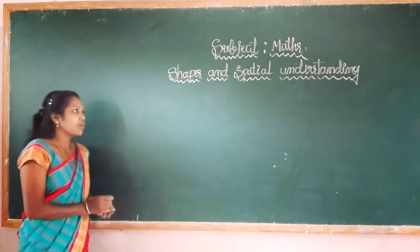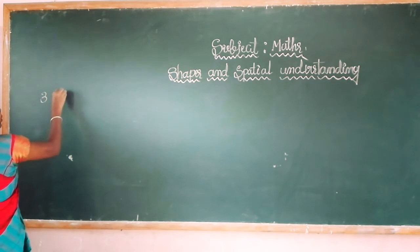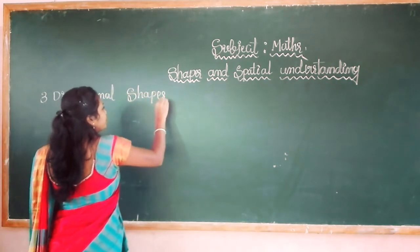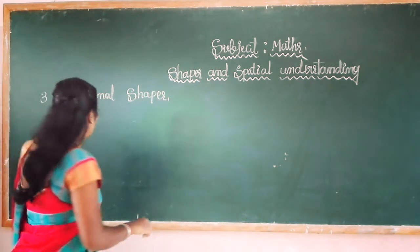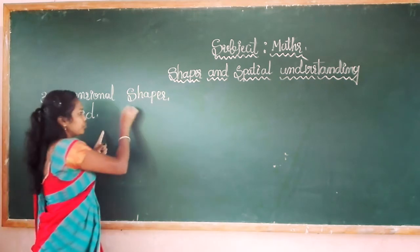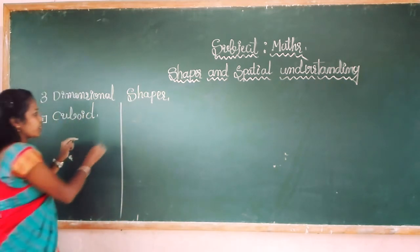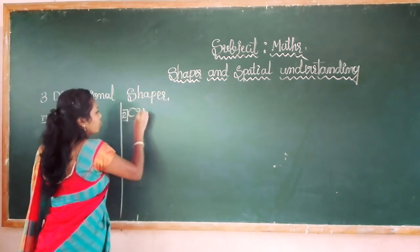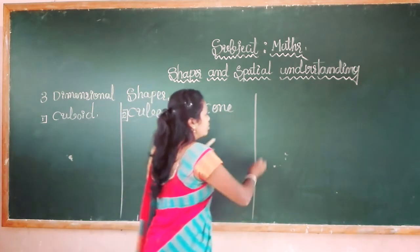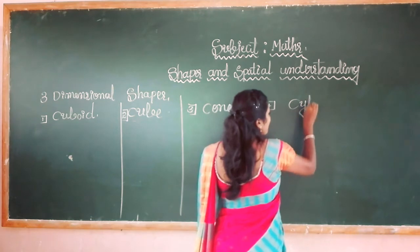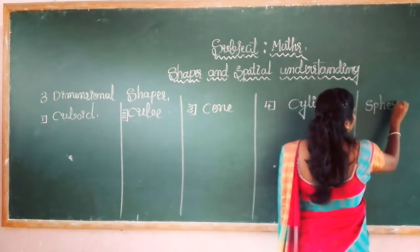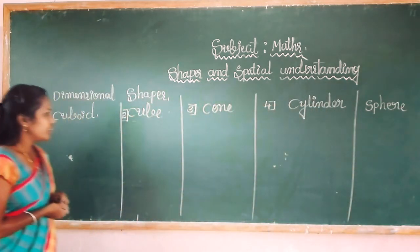Ok dear students, let's start now. 3D shapes — three-dimensional shapes. Which are the 3D shapes? I will tell you. First one is cuboid. I will tell you how to draw the cuboid shape. Second one is cube. Then the third one is cone. Then cylinder. And the last one is sphere. Let's see now how to draw the 3D shapes.